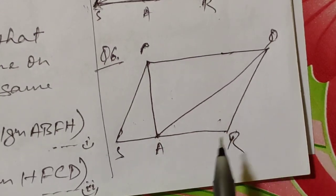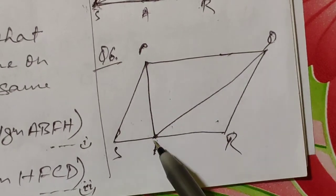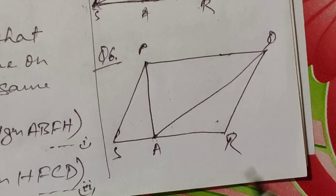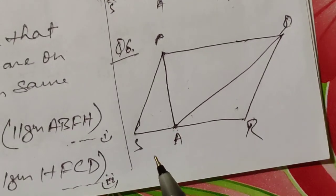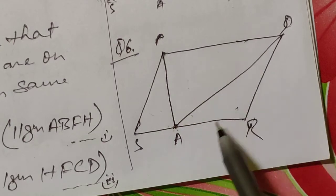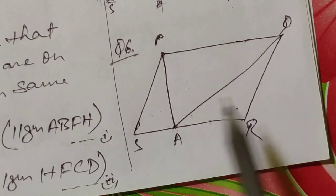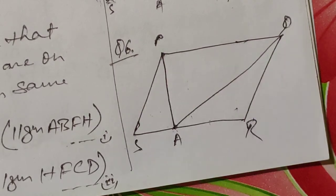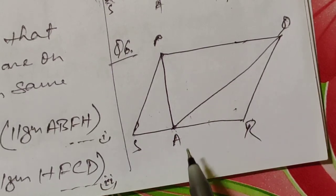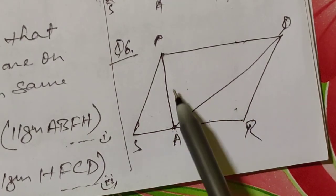So the farmer can sow wheat in triangle APQ and pulses in triangles APS and ARQ — or vice versa — since both portions are equal to half of the total field PQRS. To prove it, simply use the theorem: triangle APQ and parallelogram PQRS are on the same base PQ and within the same parallels, so area of triangle APQ equals half area of parallelogram PQRS.